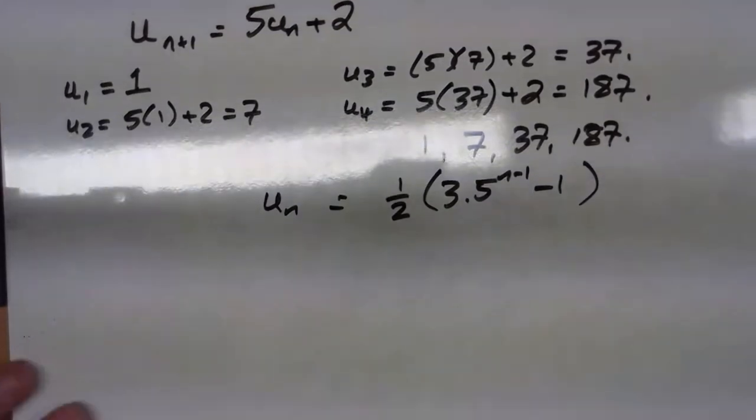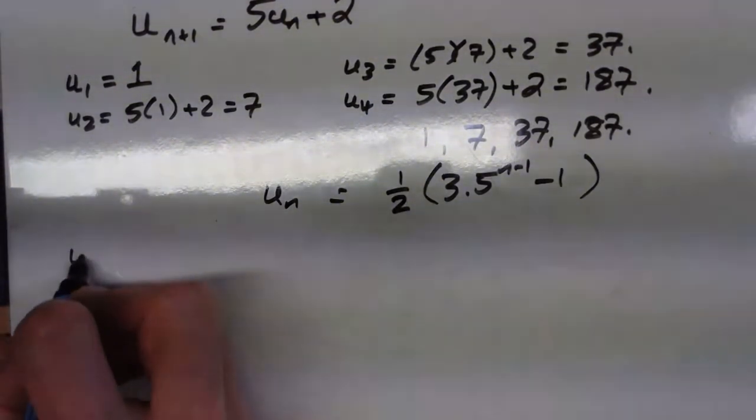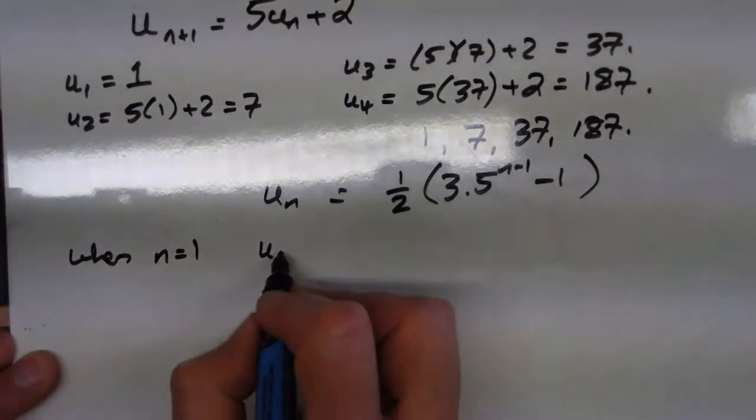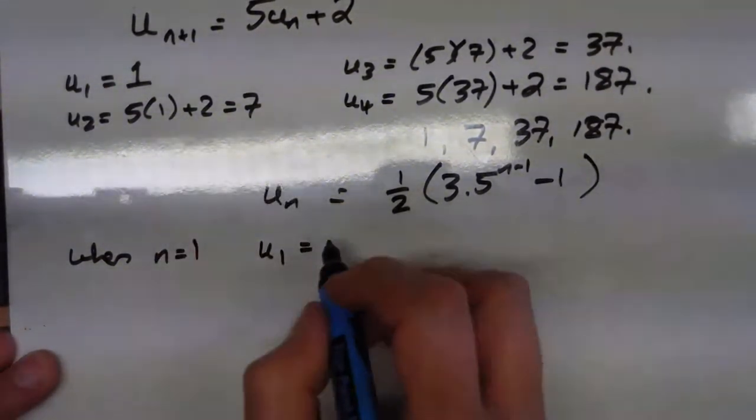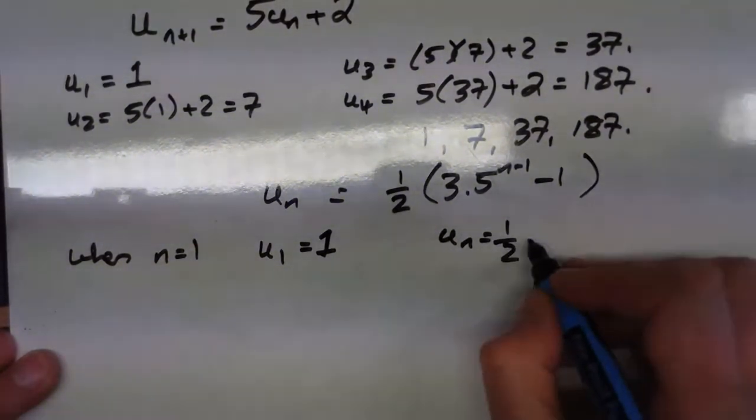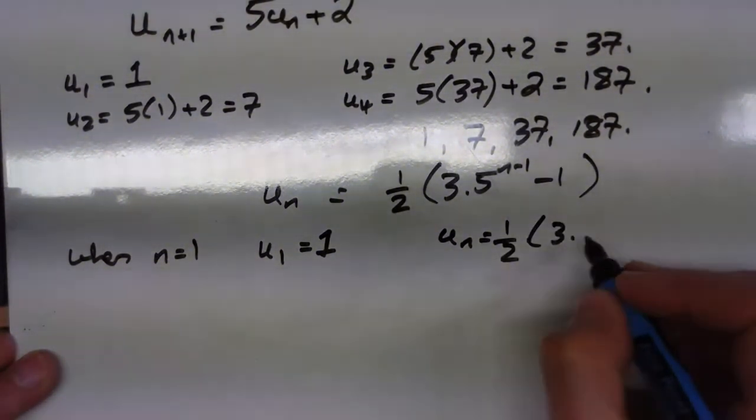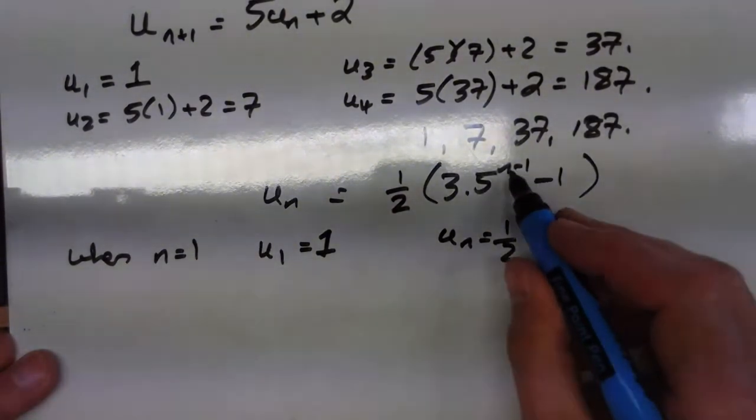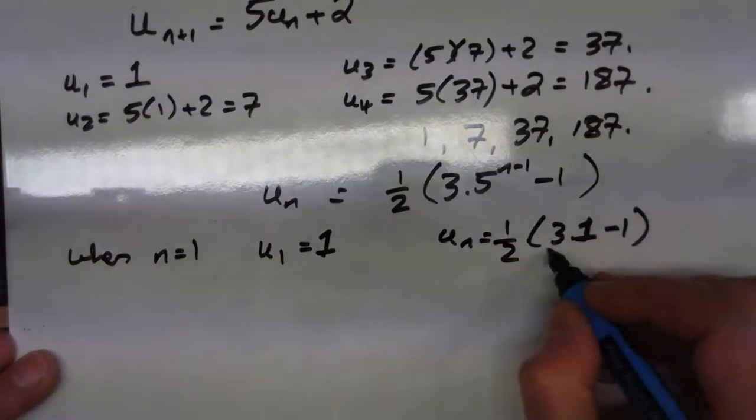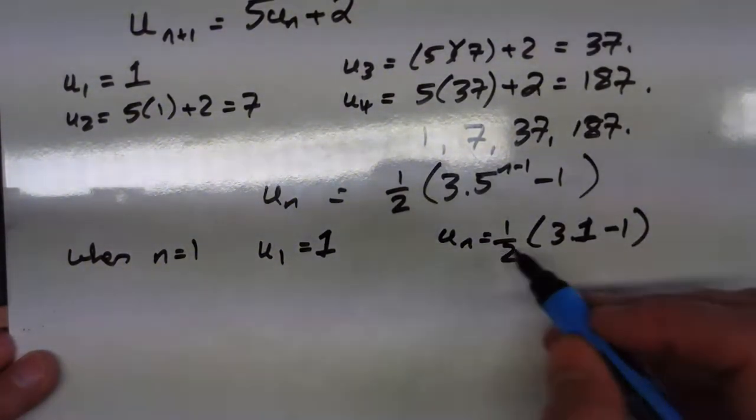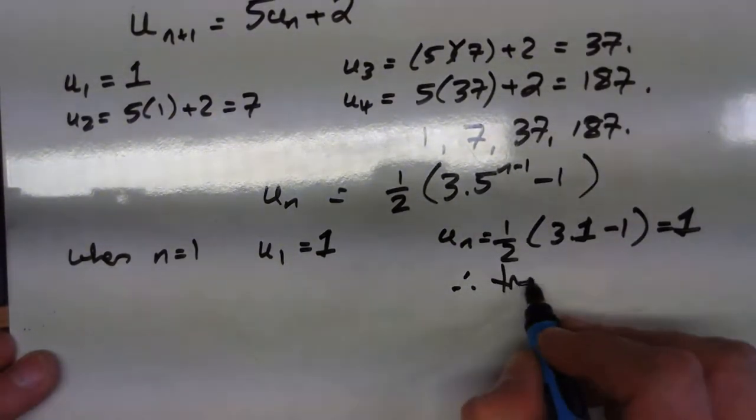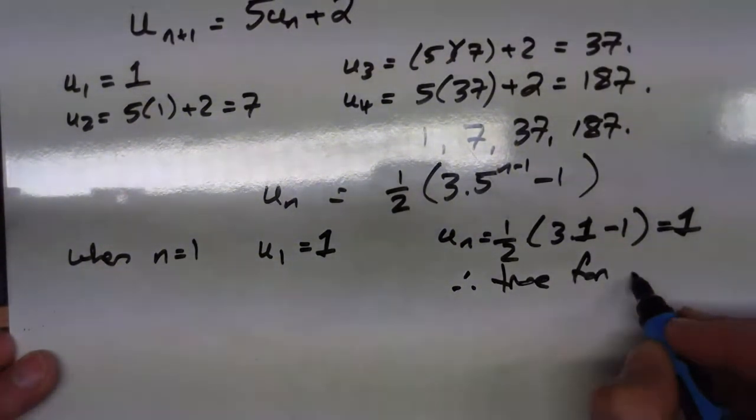So for proof, as usual, when n equals 1, u1 equals 1, we know that. And when you put a 1 in here, you get a half times 3 to the 5 to the 1, take away 1, and that's just 1. Take away 1, so it's 3 take away 1 is 2, half of 2 is 1, yes. Therefore, true for n equals 1.